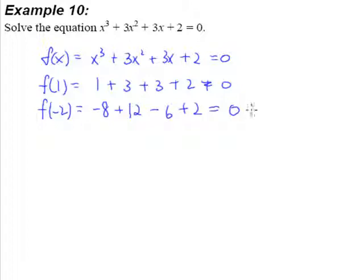So when we do get a 0, we know that x plus 2 is a factor. So now that we know one of the factors in this equation, you shouldn't have any problem finding the rest of the factors, as we have done in those earlier examples.